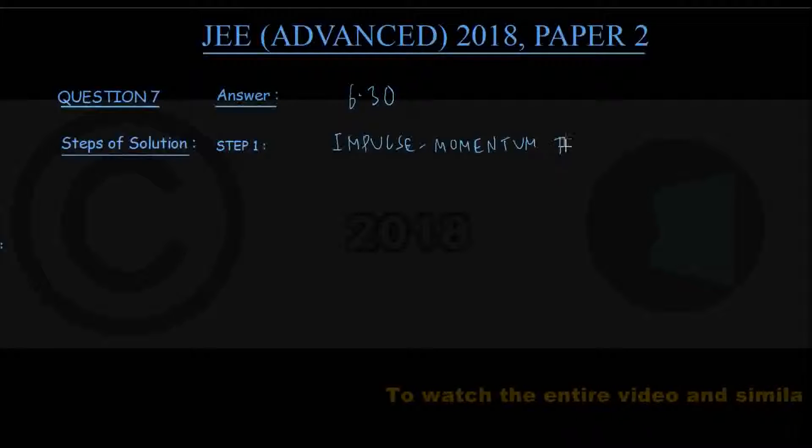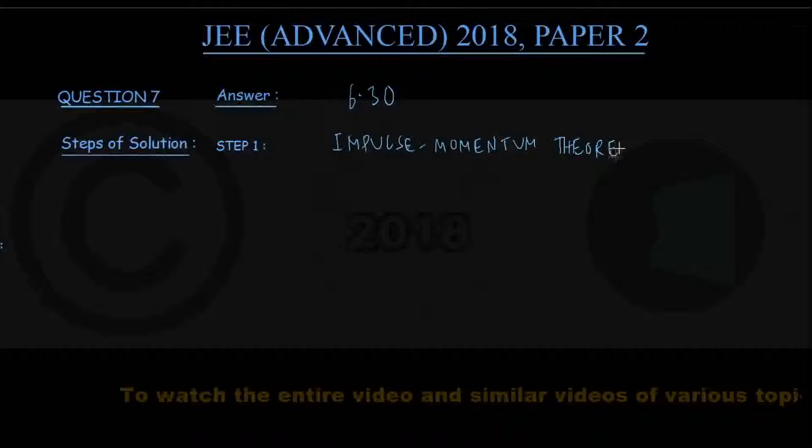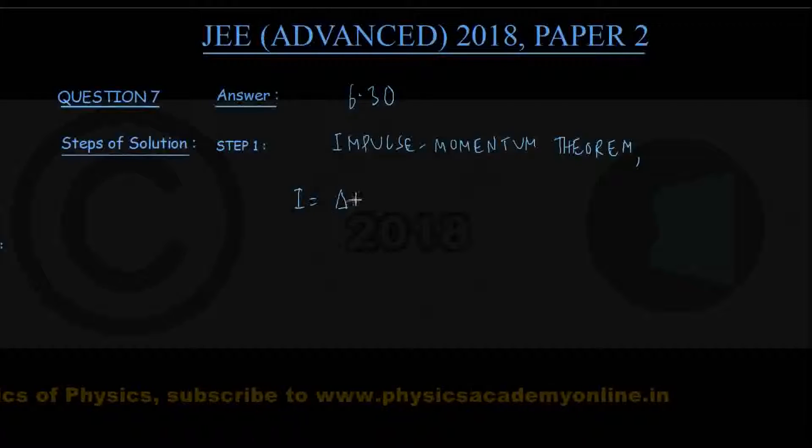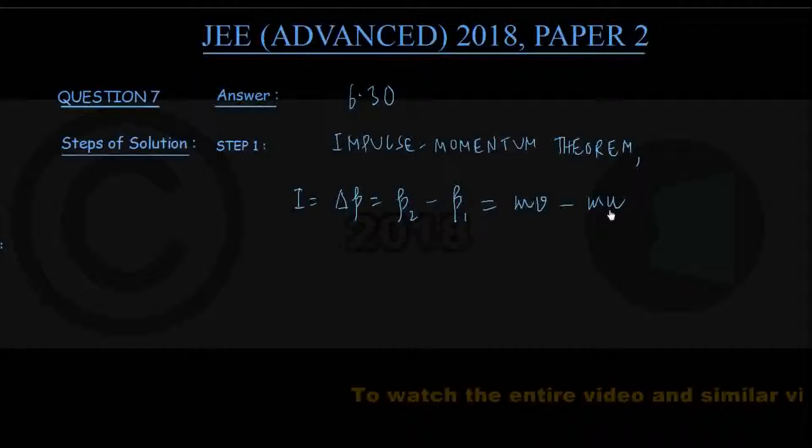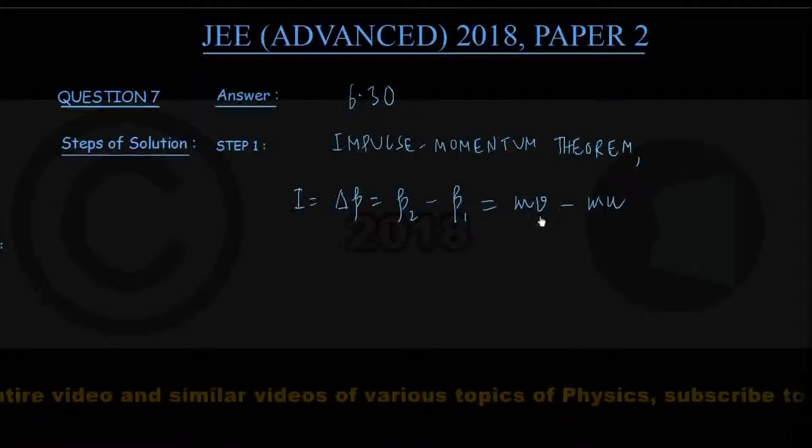By impulse momentum theorem, we can write that the impulse given to the block, I, is equal to the change in its linear momentum, delta P. The final value of momentum P2 minus initial value P1, but since the mass of the block is m, we can write P2 as mv and P1 as mu. Remember, u is the speed of this block just before the impulse, which was 0 because the block was at rest initially, and v is the speed acquired by the block just after the impulse is given.